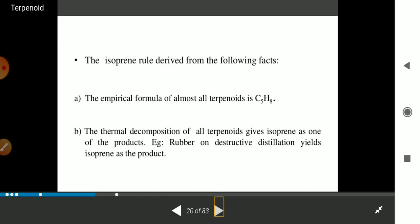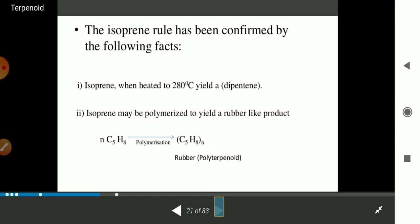For example, destructive distillation of rubber yields isoprene as a product. This has been confirmed by the following: when isoprene is heated to 280 degrees Celsius, it polymerizes to give rubber as a polyterpenoid.